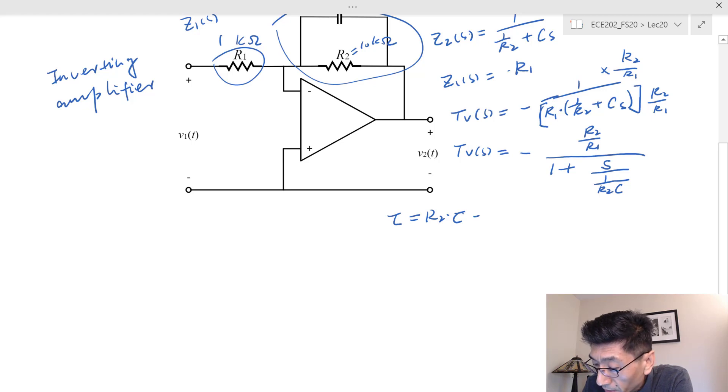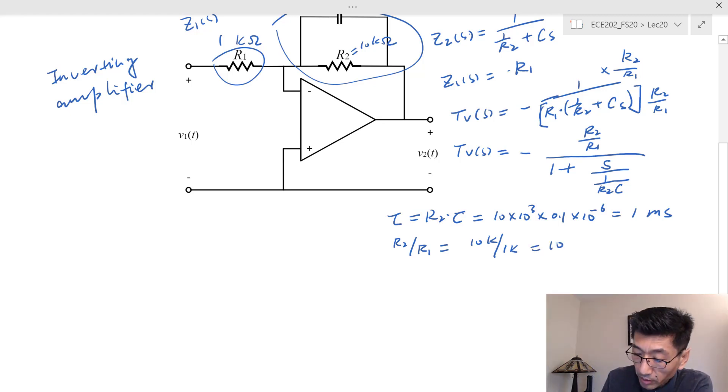The time constant, in this case we have 10k times 0.1 times 10^-6 (0.1 micro), and therefore we get that this is equal to 1 millisecond.